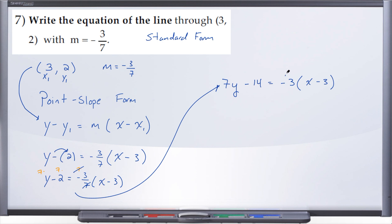So let's go ahead now and distribute this negative three through, so we end up with seven y minus 14 equals negative three x plus nine.